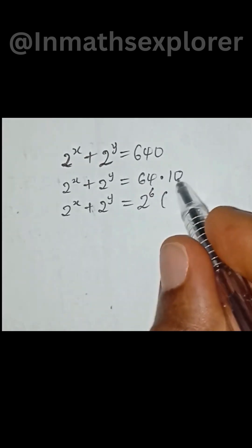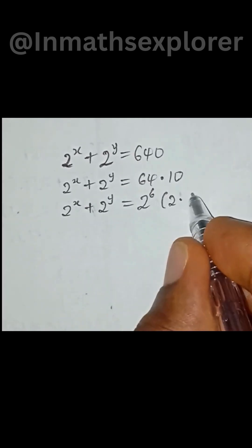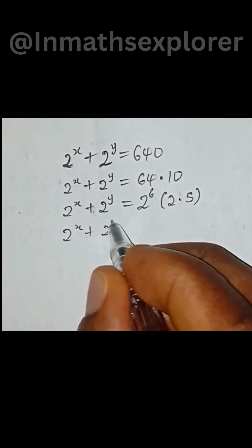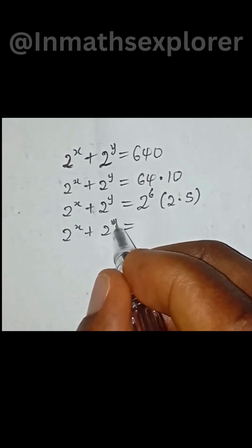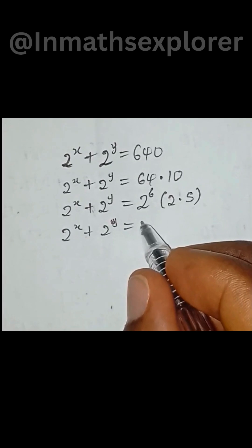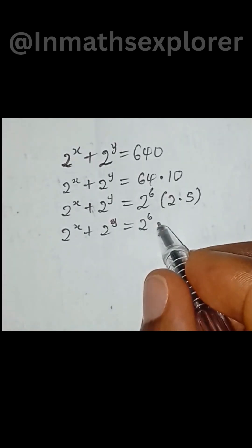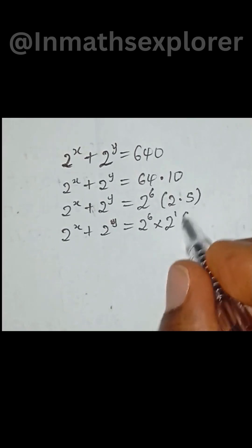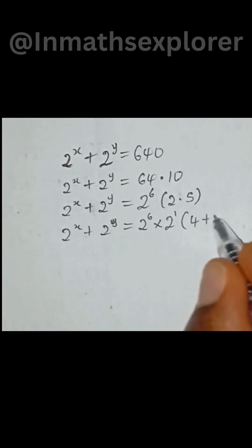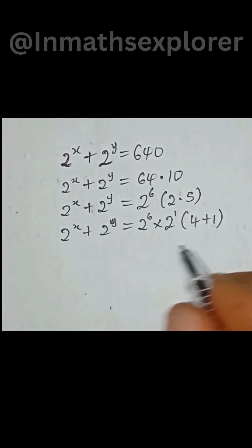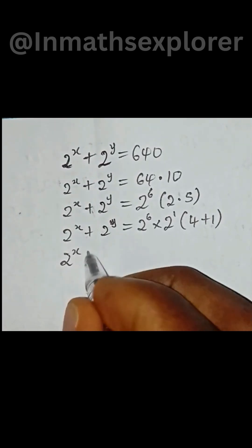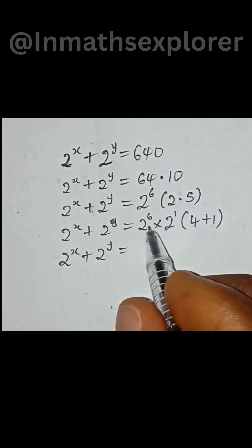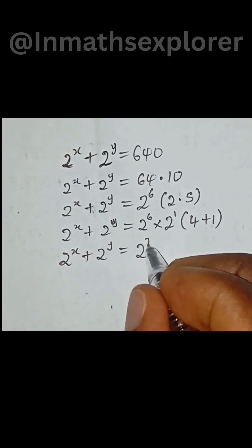So we have 2 to the power of x plus 2 to the power of y equal to 2 to the power of 6. This can be written as 2 to the power of 1, and this 5 can also be split as 4 plus 1. So then we have 2 to the power of x plus 2 to the power of y equal to, if we combine this together, we will have 2 to the power of 7.